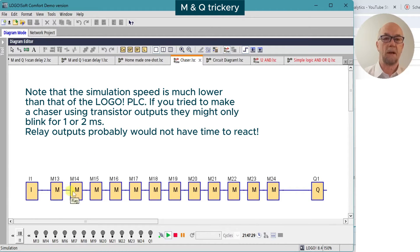At the next scan, the output of M13 is turned on, so M14 turns on, but its output doesn't update until the end of this scan. So M15 won't see it until the start of the next scan, etc., and so we have this chaser effect where the inputs turn on sequentially.